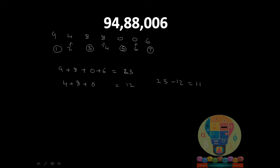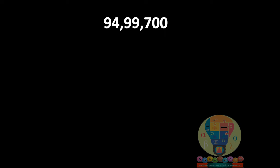The difference is twenty three minus twelve, which equals eleven. Since the difference is a multiple of eleven, this number is divisible by eleven.